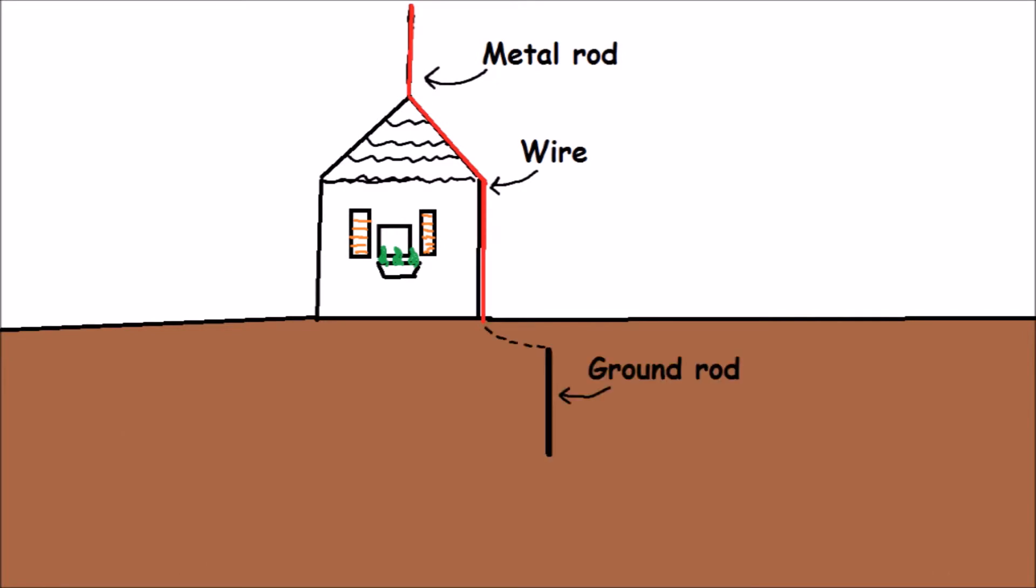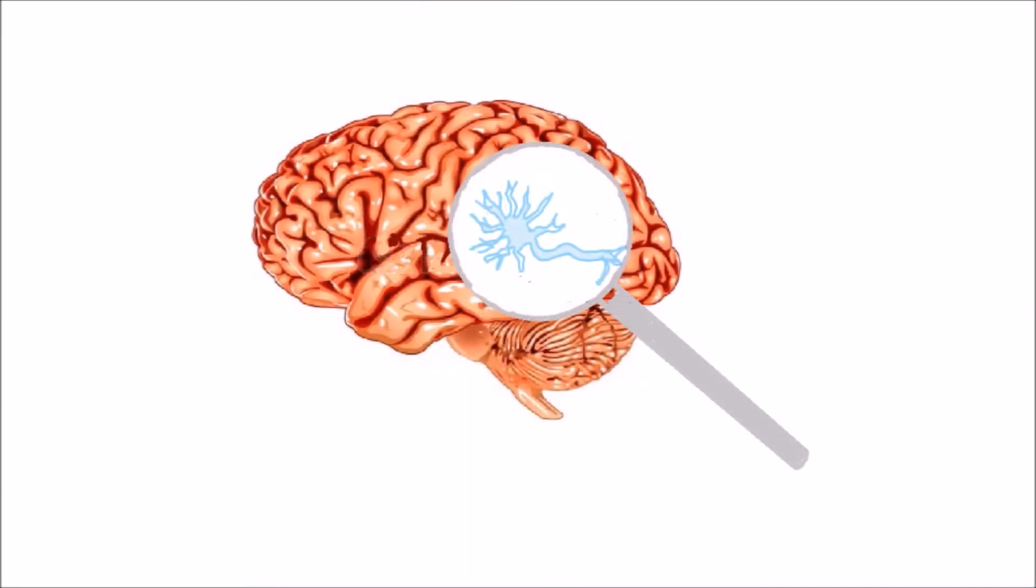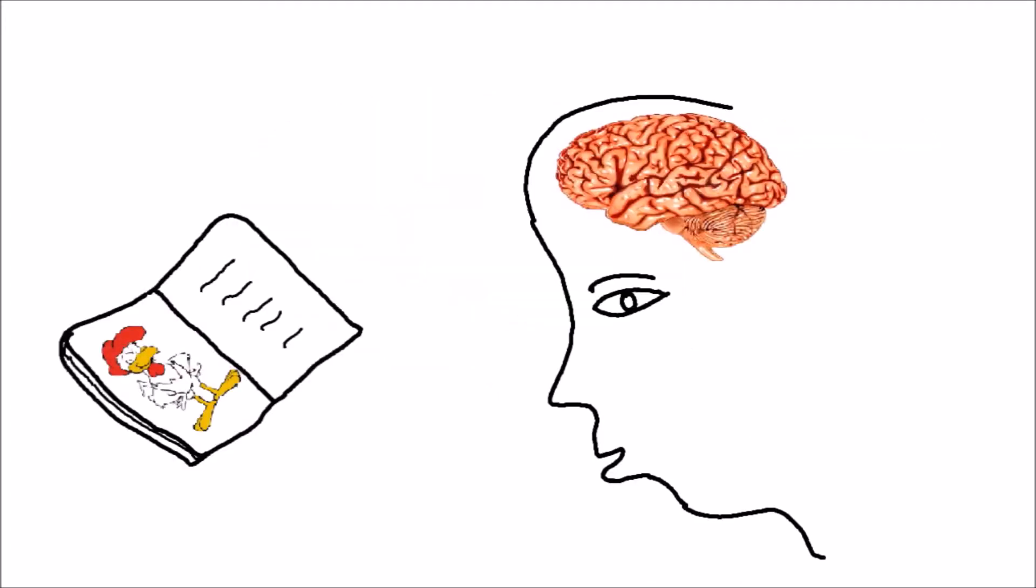Our brain works using electricity. There are more than 100 billion neurons which carry electric signals to different parts of the body. When we read a book, light rays pass into the eyes and change into electrical signals, then lead to the brain.